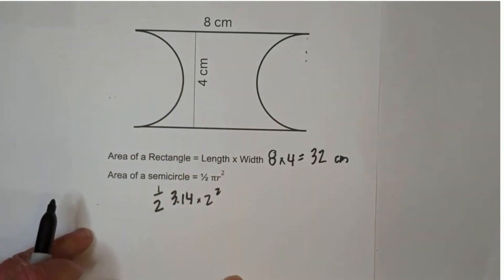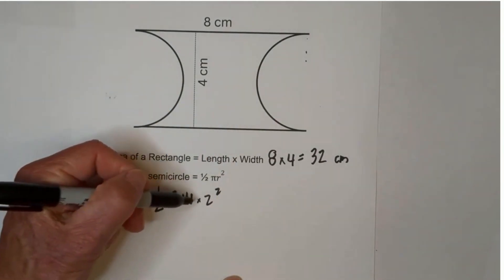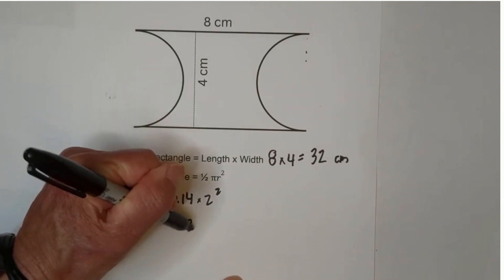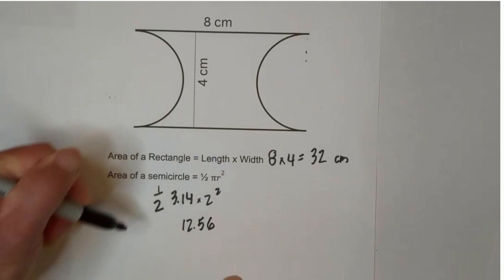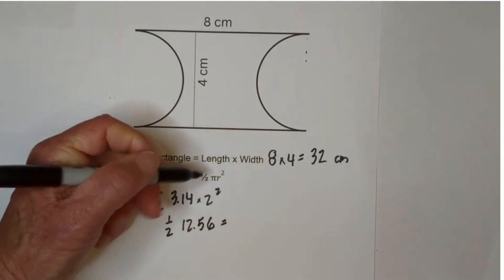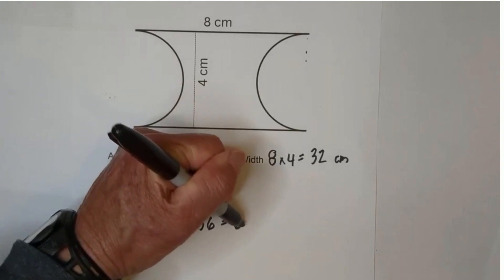The diameter is 4, remember the diameter is 4, so we're going to use half of that, which is 2, and we're going to square that. When you multiply 3.14 times 2 squared, you get 12.56, and we're going to multiply that by 1/2. When you do that, you get 6.28.